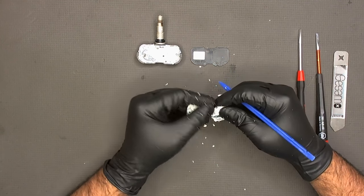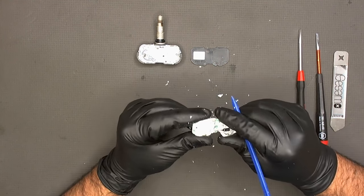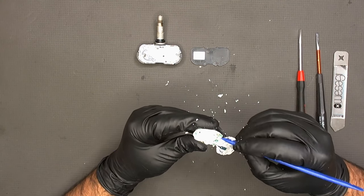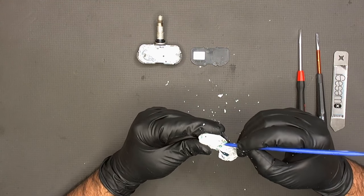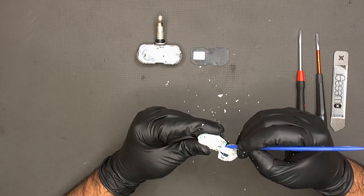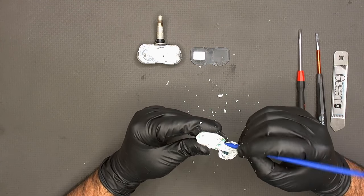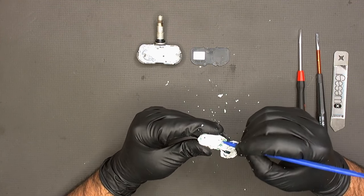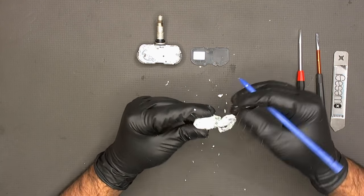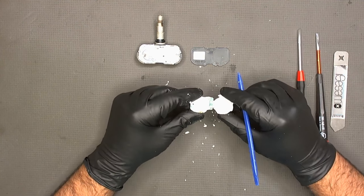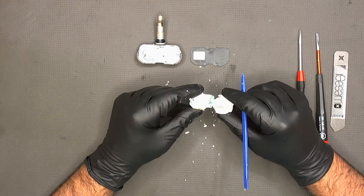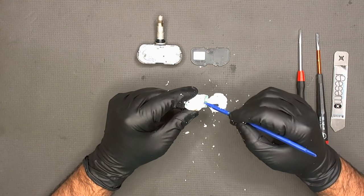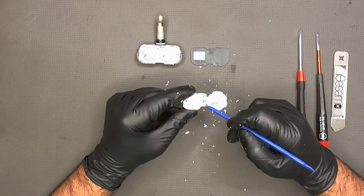This is all the cleaning that we need. We just need to make sure that the solder points are actually clear of all the silicon so that we can take them out. Now let's take a soldering iron and then take these two connections out.